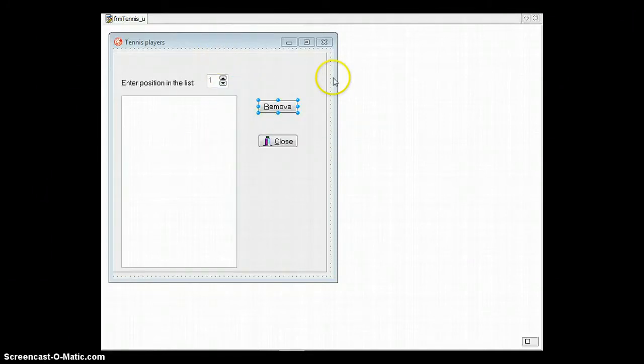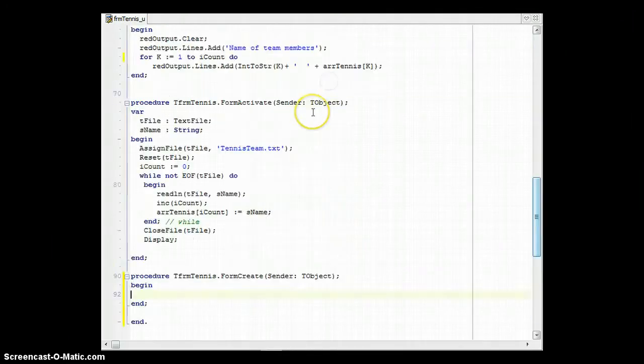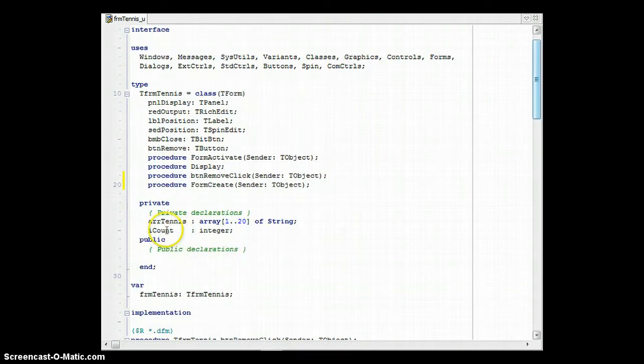So let's look at our array first. We're going to go right to the top, and as you can see, we've got a global array called arrayTennis which can take 20 elements, but we're never sure if we're going to fill it or not. That's why we've got this iCount variable, which will tell us exactly how many elements are actually in the array.